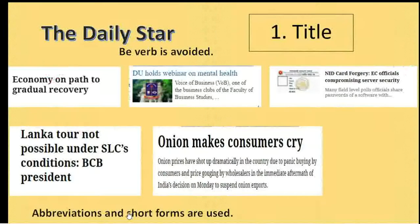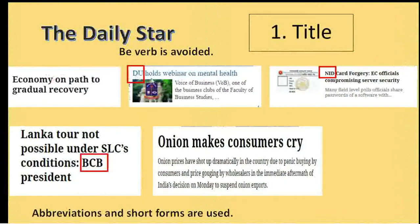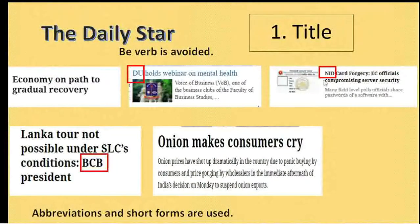Another thing is that abbreviations or short forms are used. Here, DU — that is Dhaka University — the short form DU has been used. Here, NID — that is National Identity Card — the abbreviation NID has been used. And here, BCB — Bangladesh Cricket Board — the short form BCB has been used.